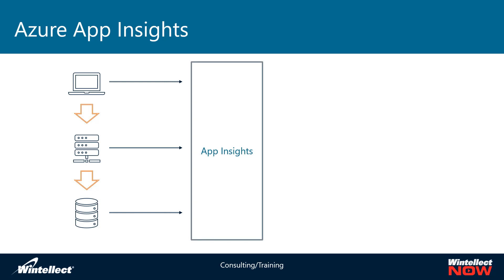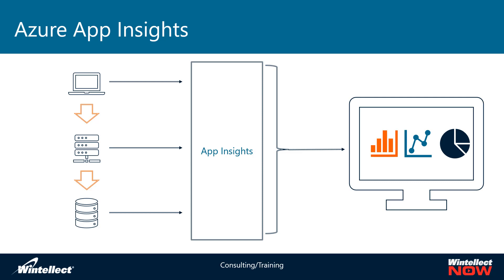App Insights collates all of that data and logs it. It's not in real time, but it's being written to the servers on Azure — regardless of whether it's coming from on-premise or from within Azure — into App Insights, which collates all that data and produces a report you can view in your browser showing you exactly what is happening inside your application, whether healthy requests or unhealthy requests.